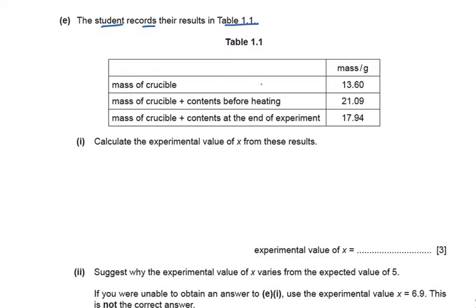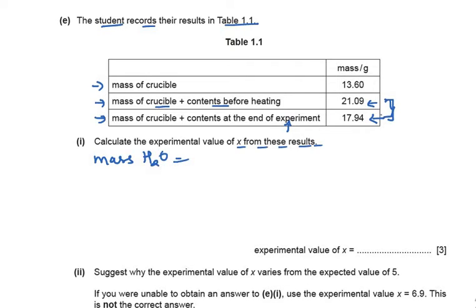Part E: the student records results in Table 1.1. Mass of crucible = 13.60 g; mass of crucible plus contents before heating = 21.09 g; mass of crucible plus contents after heating = 17.94 g. We need to calculate the experimental value of x. First, calculate the mass of water lost: 21.09 − 17.94 = 3.15 g of water.